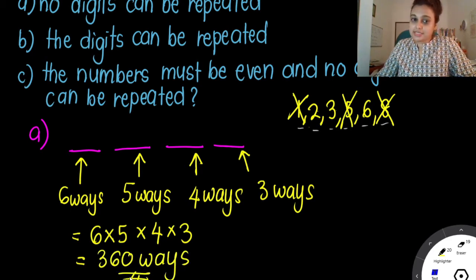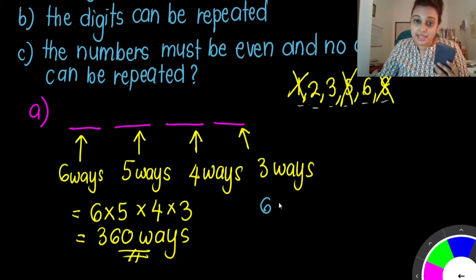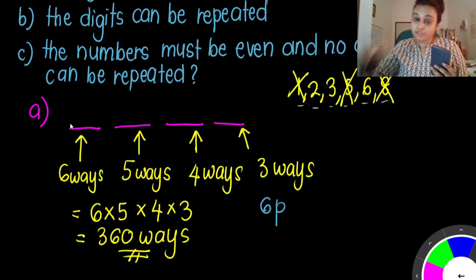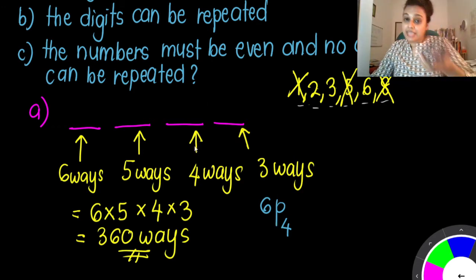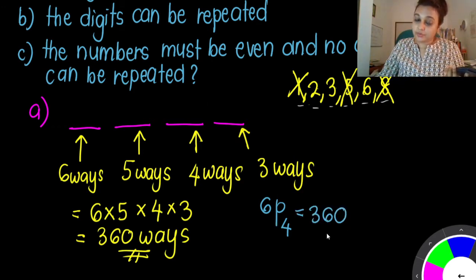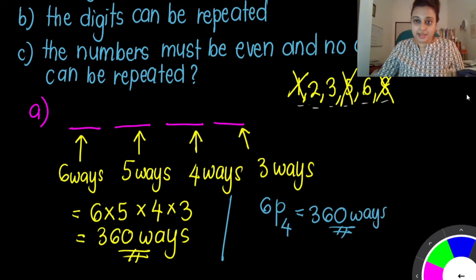Since we already know how many ways, what we can straight away do is take 6, multiply 5, multiply 4, multiply 3. So here we get 360 ways. Now 6 × 5 × 4 × 3, you can also write it this way: 6 is the total digits that we have, and 4 is the number of spaces we are arranging — so 6 permutation 4, you also get 360. Both ways you can write this — you can write it as 6 × 5 × 4 × 3, or as P(6,4), and question A is done.